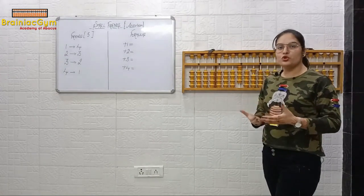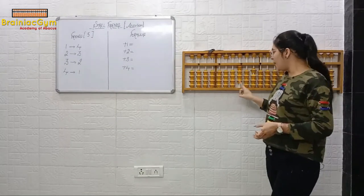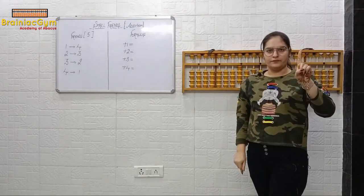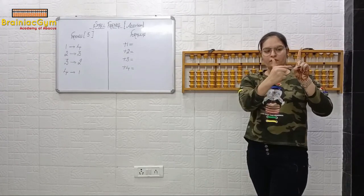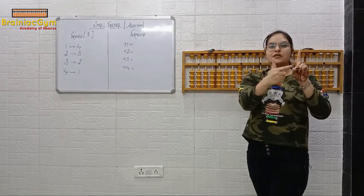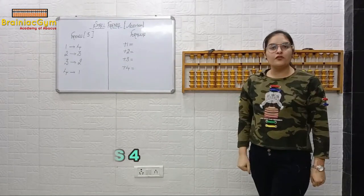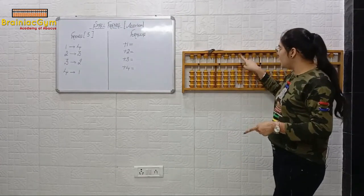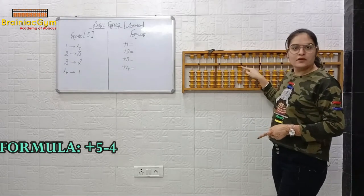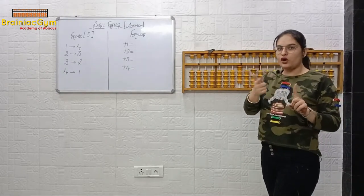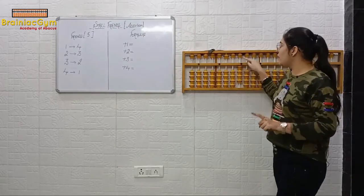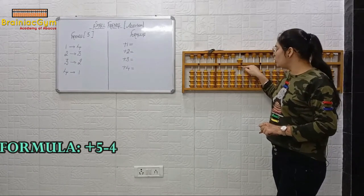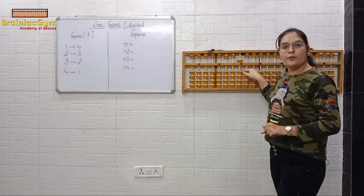We will understand which formula will be used to do plus one. We have to do plus one, so first we will see the friend of one. What is the friend of one? Just count on your fingers: one, two, three, four — friend of one is four. Total small friends is five. So the formula will be plus five minus four — plus five is our total small friends, and minus four is the friend of one.